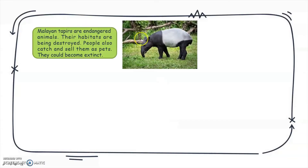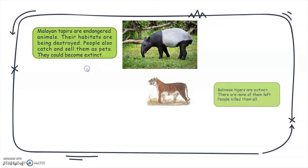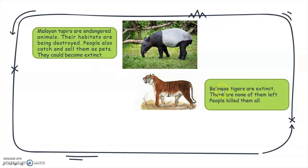The first example is the Malayan tapir — an endangered animal. Their habitats are being destroyed and people also catch and sell them as pets, so they could become extinct. The second example is the Bali tiger — an extinct animal. There are none of them left. People killed them all.